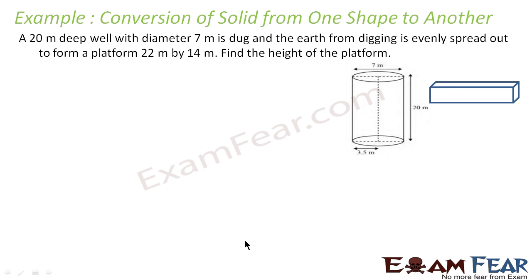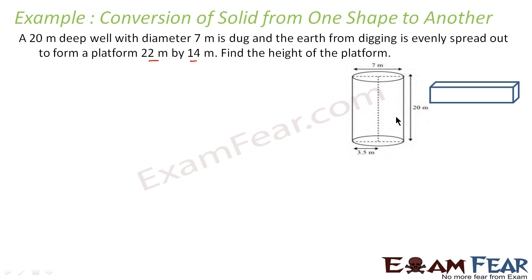A 20 meter deep well with a diameter of 7 meters is dug, and the earth from the digging is evenly spread out to form a platform 22 meters by 14 meters. So this is a well with diameter 7, that is radius 3.5, and height 20 meters that is dug out.